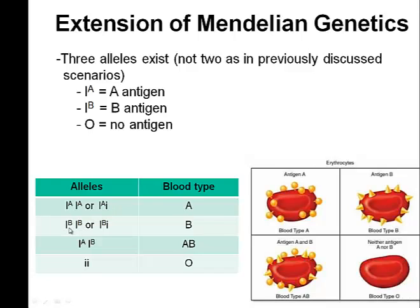If you have type B blood, you have either two B alleles or a B allele and an O allele, both giving type B blood. If you have type AB blood, there's only one possible genotype — one A allele and one B allele. Here is where co-dominance comes in: both alleles are completely expressed, neither covers up the other, and they are both equally expressed when they occur together. The only way to have type O blood is to be homozygous for the O allele.